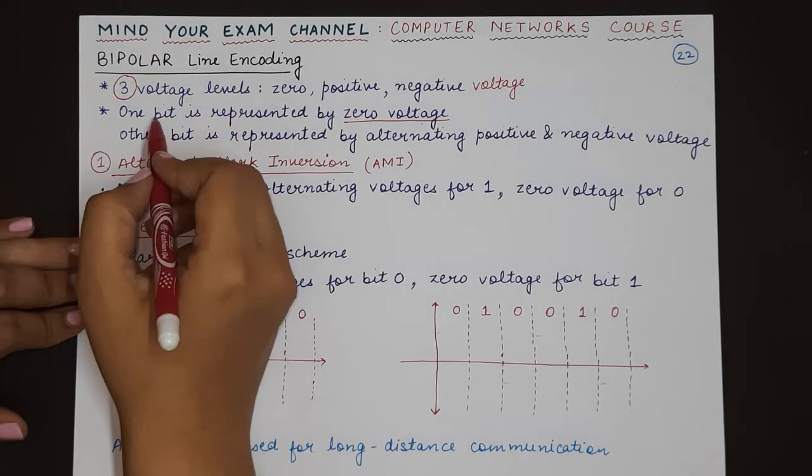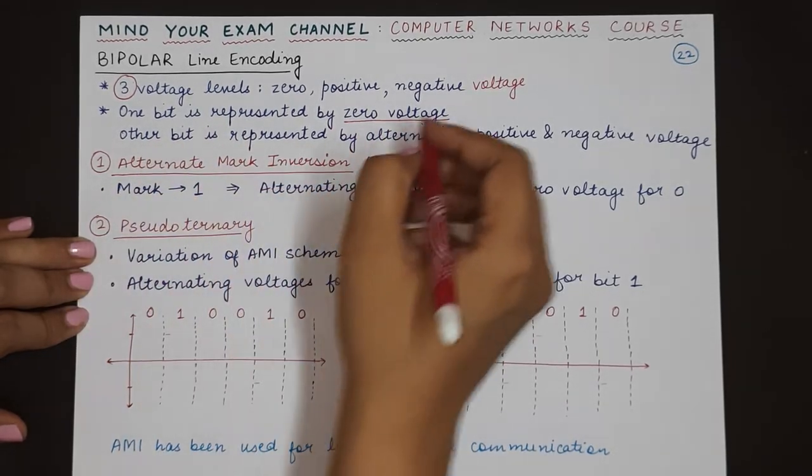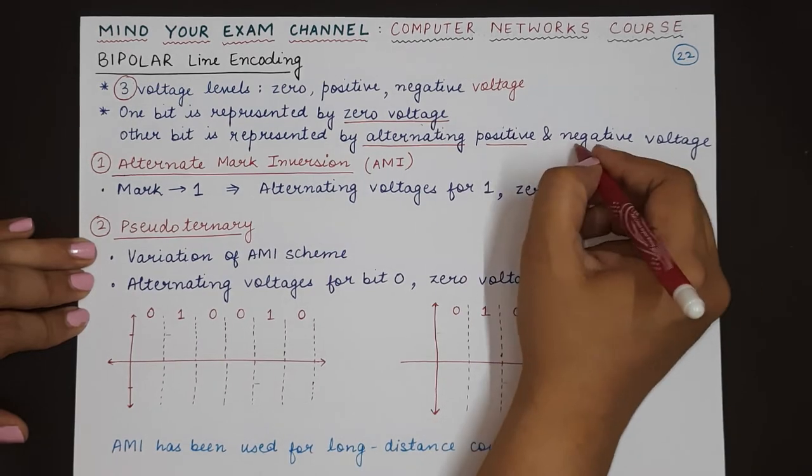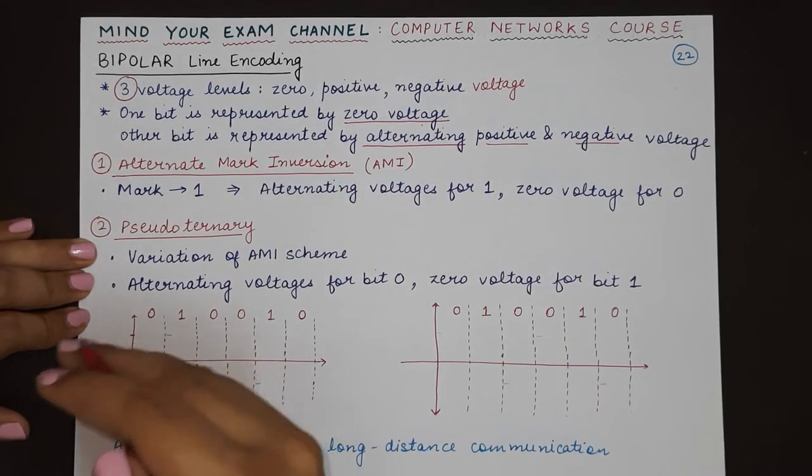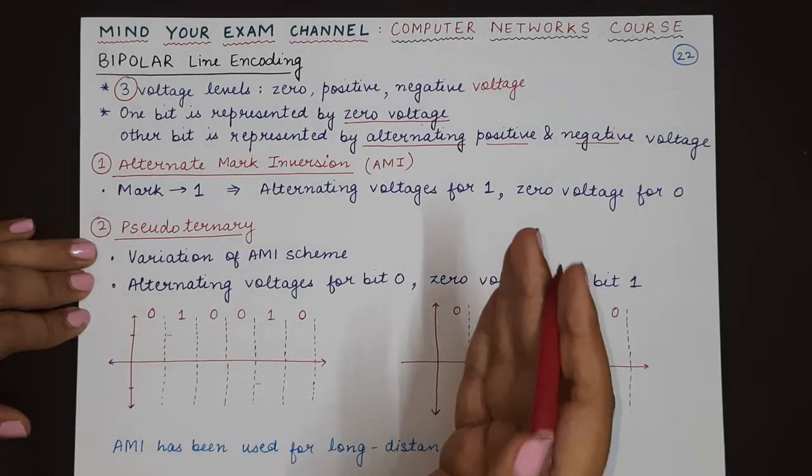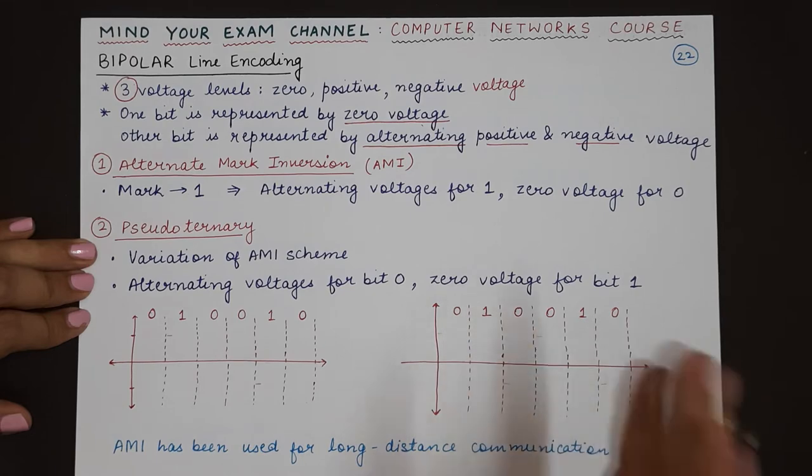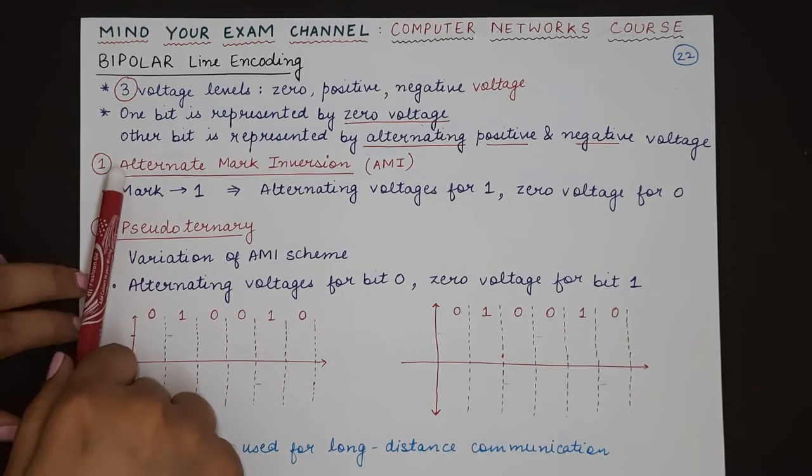the other bit will be represented by positive and negative voltage alternatingly. Once it has been represented as positive, the next time the same bit occurs it will be represented as negative, then positive, and so on. Let's see the variations of bipolar.